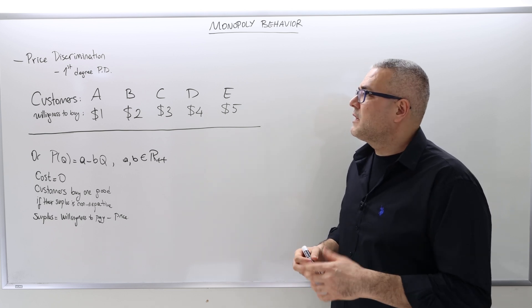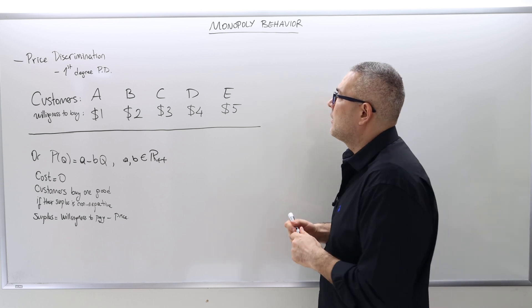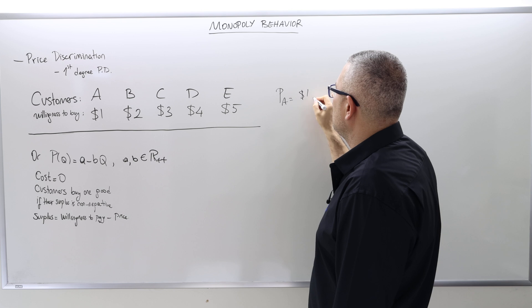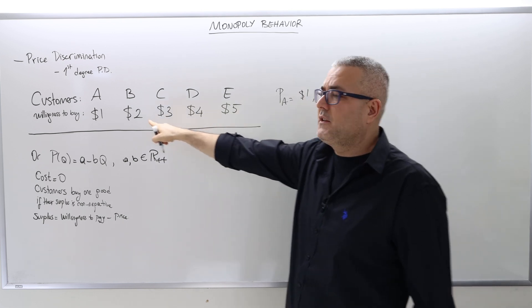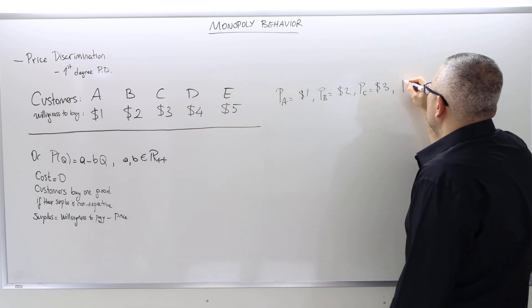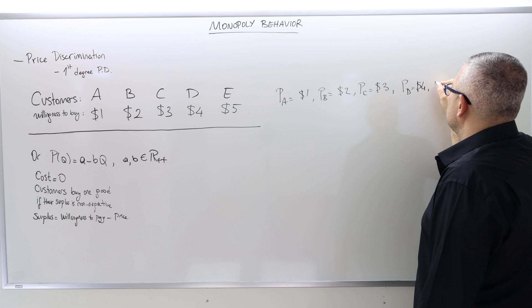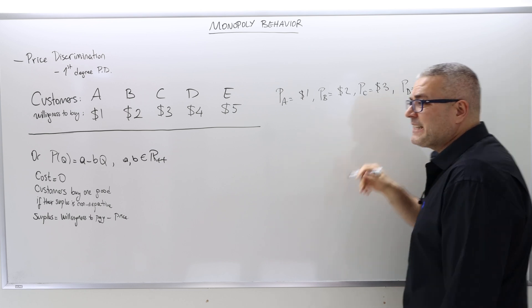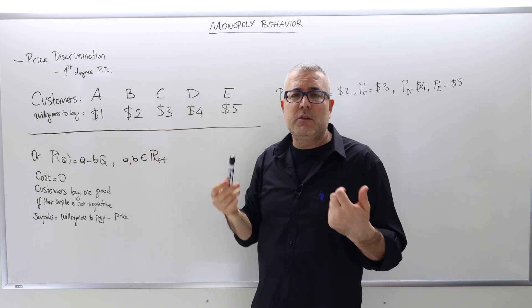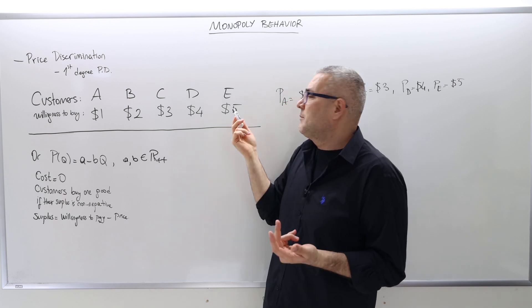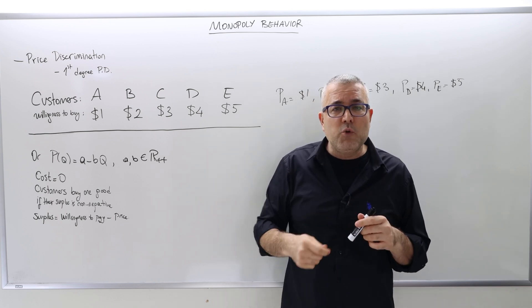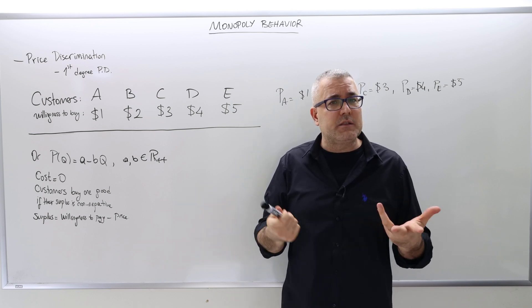Given all this, what does the monopolist do? The monopolist is going to charge five different prices. The price for customer A is $1 — her willingness to pay. Price for customer B is $2, customer C is $3, customer D is $4, and customer E is $5. It's exactly the same good — say a marker — sold at different prices. Why does customer E pay $5? Because they really need the marker, so they're willing to pay five dollars — so why not charge five dollars?